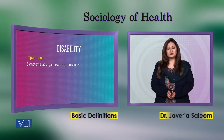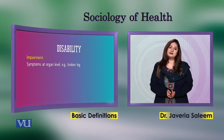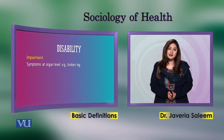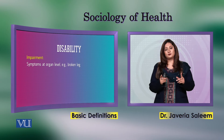Now let's go to disability. Disability exists in a sequence. First is impairment — impairment refers to a symptom at the organ level. For example, if a person has an accident and their leg fractures, that damage at the organ level is the impairment.